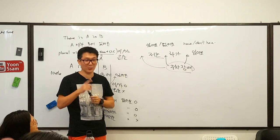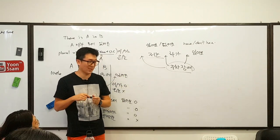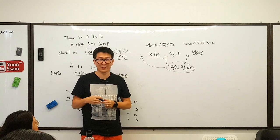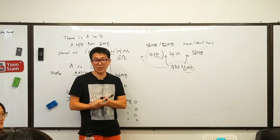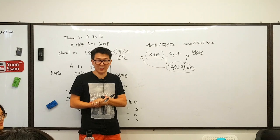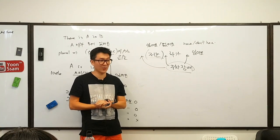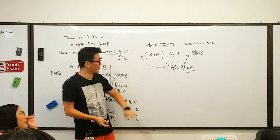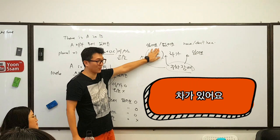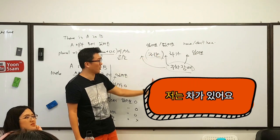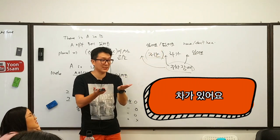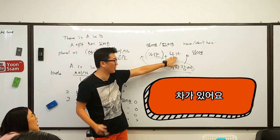Now there is one more thing I need you to understand. Korean often removes 'I'. Like 'I love you' — we don't say 저는 당신 사랑해요; we just say 사랑해요, right? You don't say 저는. So by removing 저는, 차가 있어요 and 저는 차가 있어요 are basically the same meaning, but 차가 있어요 can also literally mean 'there is a car'.